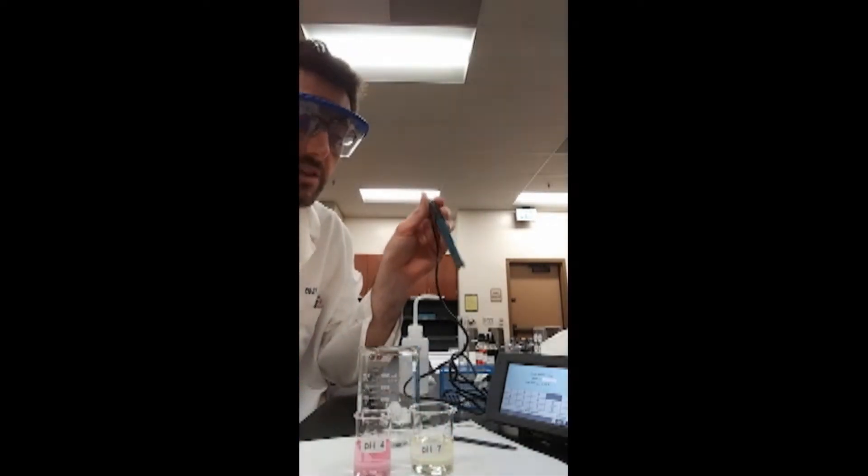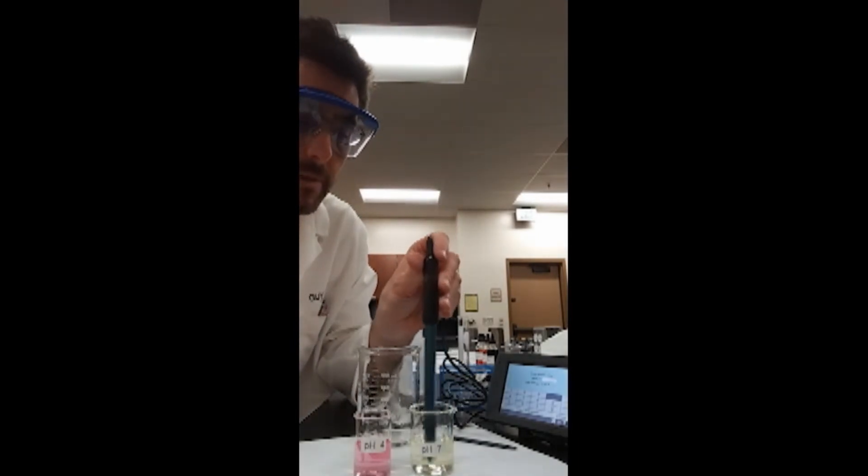Once I've blotted the water away, I dip the probe into the pH 7 buffer solution and I swirl.